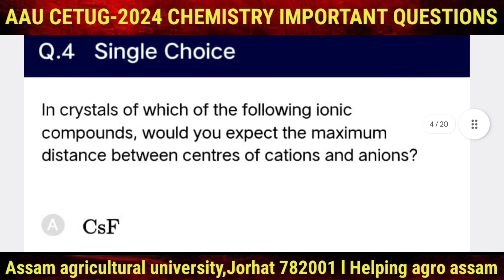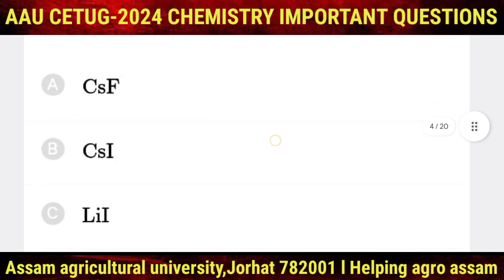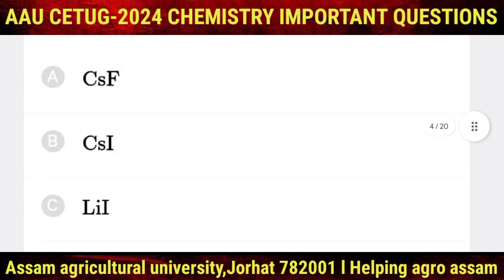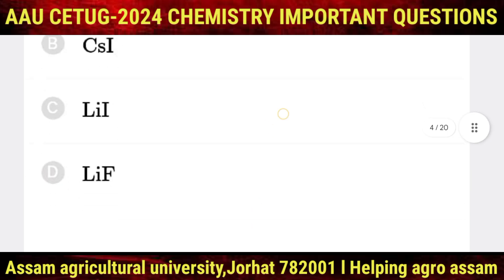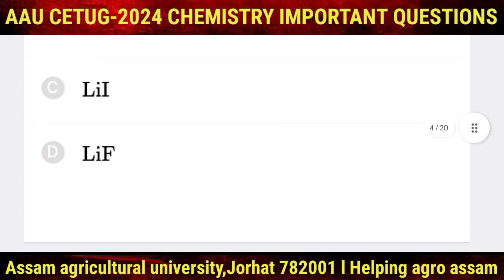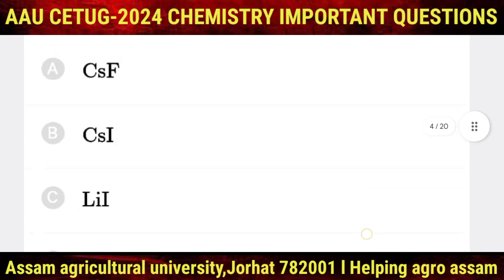The next question is: in crystals of which of the following ionic compounds would you expect the maximum distance between centers of cations and anions? The options are CsF, CsI, LiI, and LiF. The correct option is B, that is CsI.